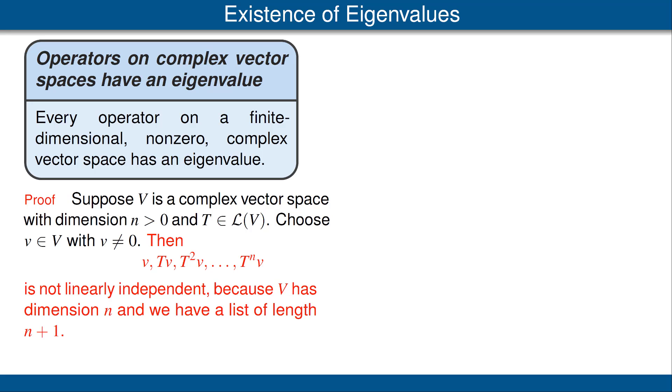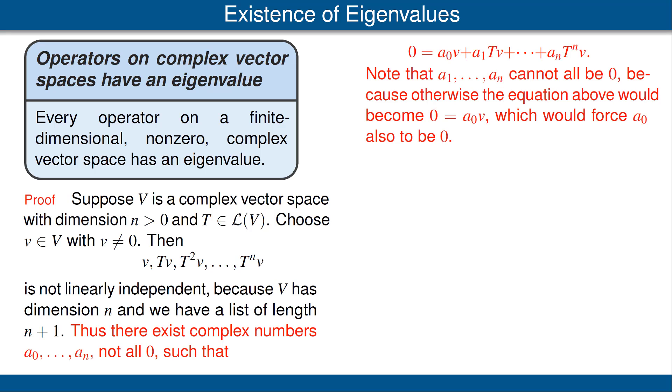Thus, some non-zero linear combination of the vectors in this list equals zero. In other words, there exist complex numbers a0 up to an, not all zero, such that we have the top equation here in the right-hand column. Note that a1 up to an cannot all be zero, because otherwise we would be left just with the equation zero equals a0 of v. But v is not zero by choice; that would force a0 to be zero. And then if all the a1 up to an are also zero, all the a's would be zero, which is not the case here.